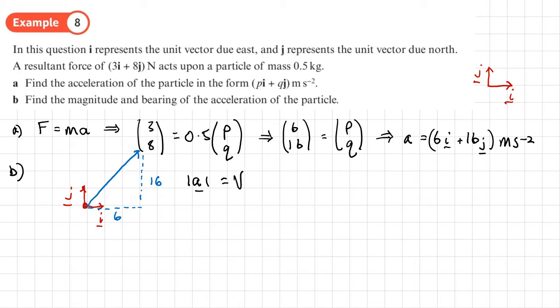So we can just do Pythagoras on 16 and 6. It's going to be the square root of 16 squared plus 6 squared. If we work that out on our calculators, we'll get an exact value of 2√73.